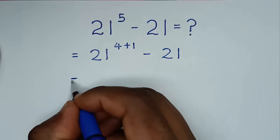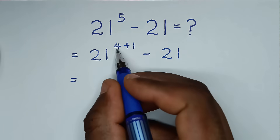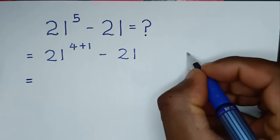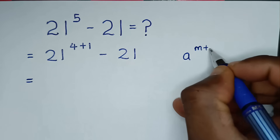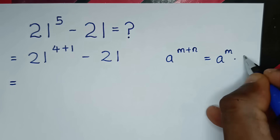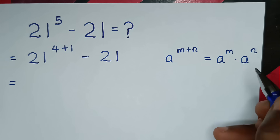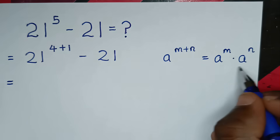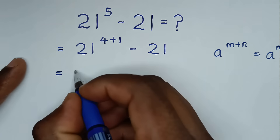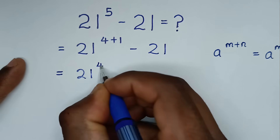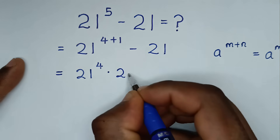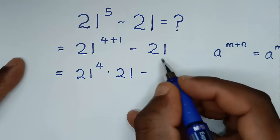It will be equal to: from here, 21 power 4 plus 1 is in the form of a power m plus n, which is equal to a power m times a power n. Applying this rule, it becomes 21 power 4 times 21 power 1, which is 21, then minus 21.